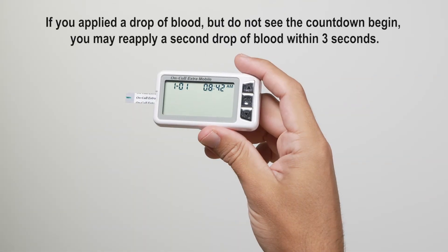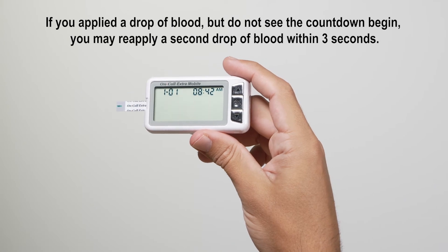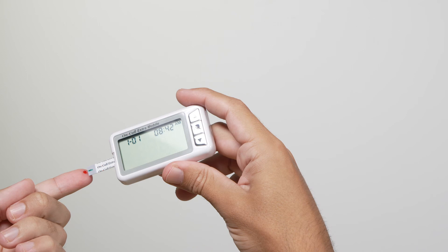At this time, a blood drop can be added. Touch the blood drop to the sample tip at the end of the test strip. If the audio option is turned on, the meter will beep to indicate that the sample is sufficient and the measurement has started.